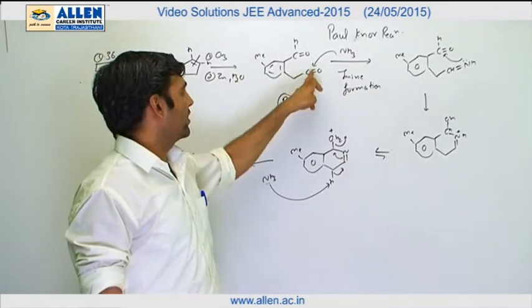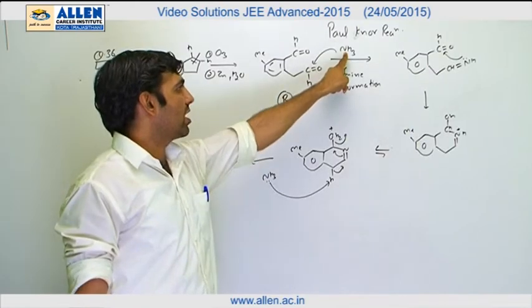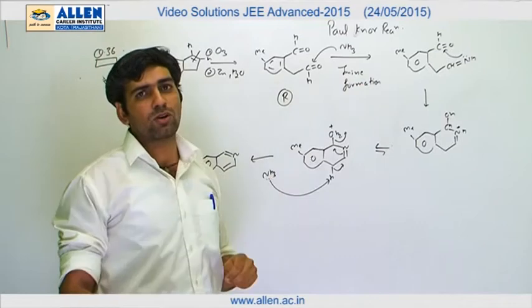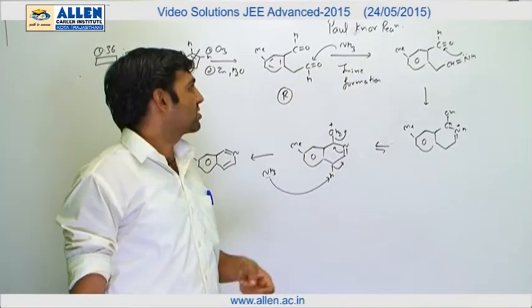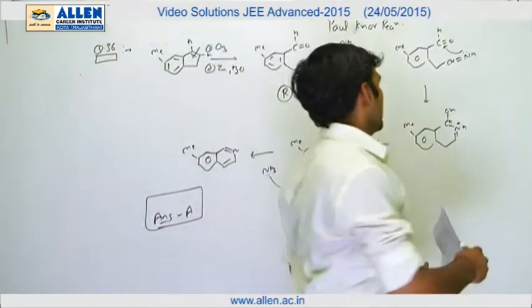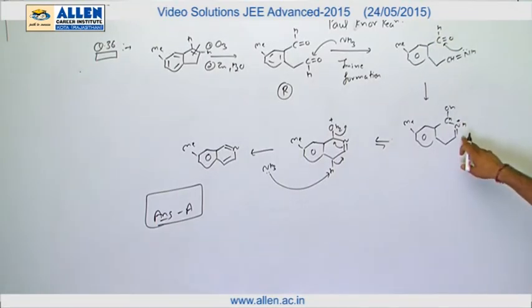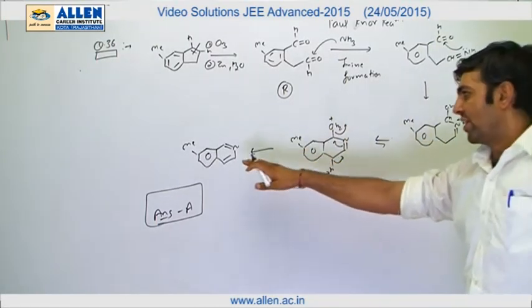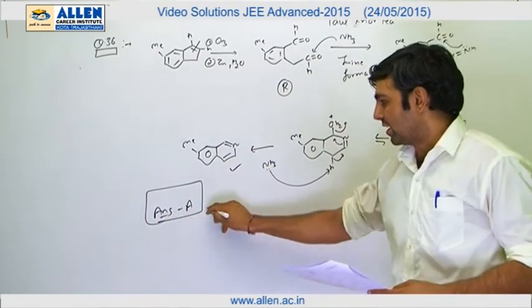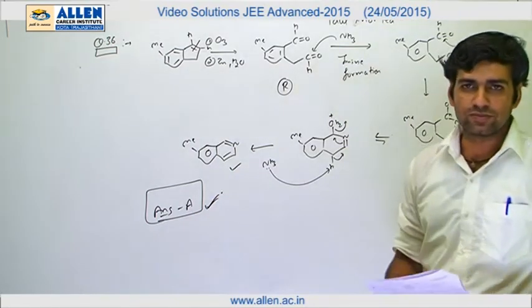This carbonyl is more electrophilic, so in the next step, ammonia molecule will attack this aldehyde. This reaction is the Paul Knorr reaction, where ammonia attacks dicarbonyl compounds.